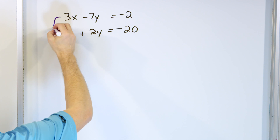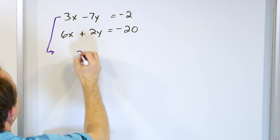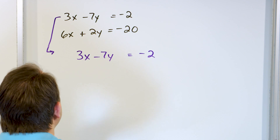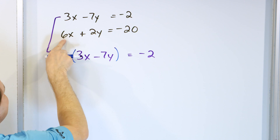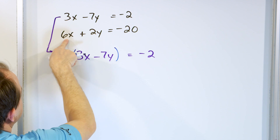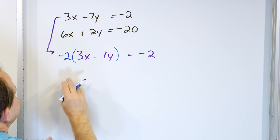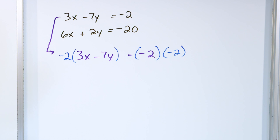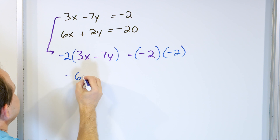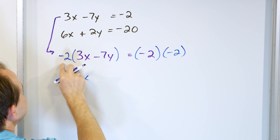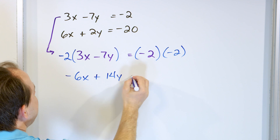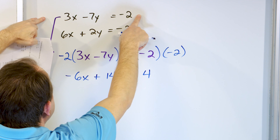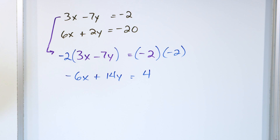Let's take the top equation — 3x minus 7y equals negative 2 — and figure out what we can multiply it by so that when we add it to the 6x term, it cancels. We have to multiply by negative 2. If we do it to the left side, we must multiply by negative 2 on the right as well. So we get negative 6x, then negative 2 times negative 7 gives positive 14y, and the right side becomes positive 4. This equation, even though it looks totally different, really is the same thing as the original.